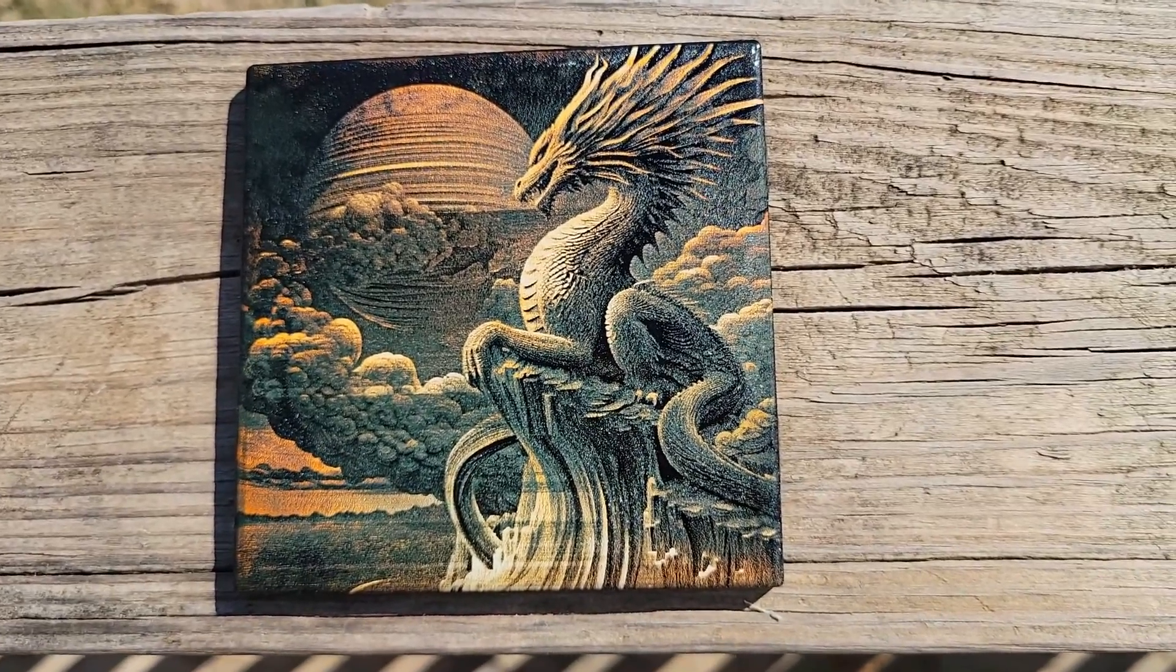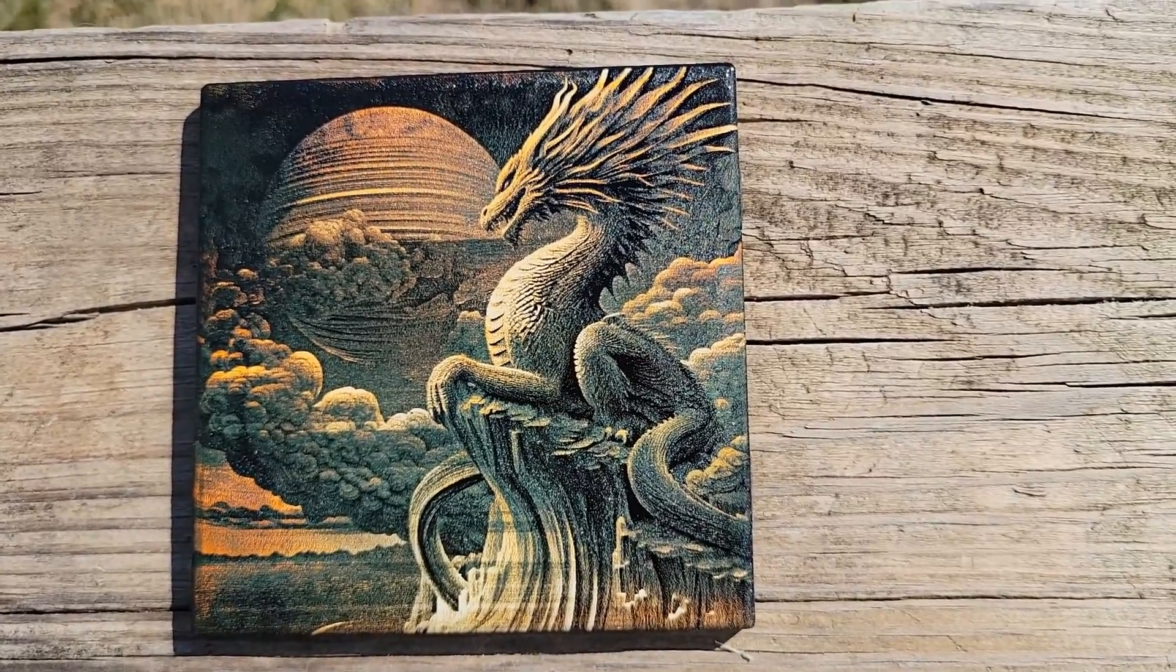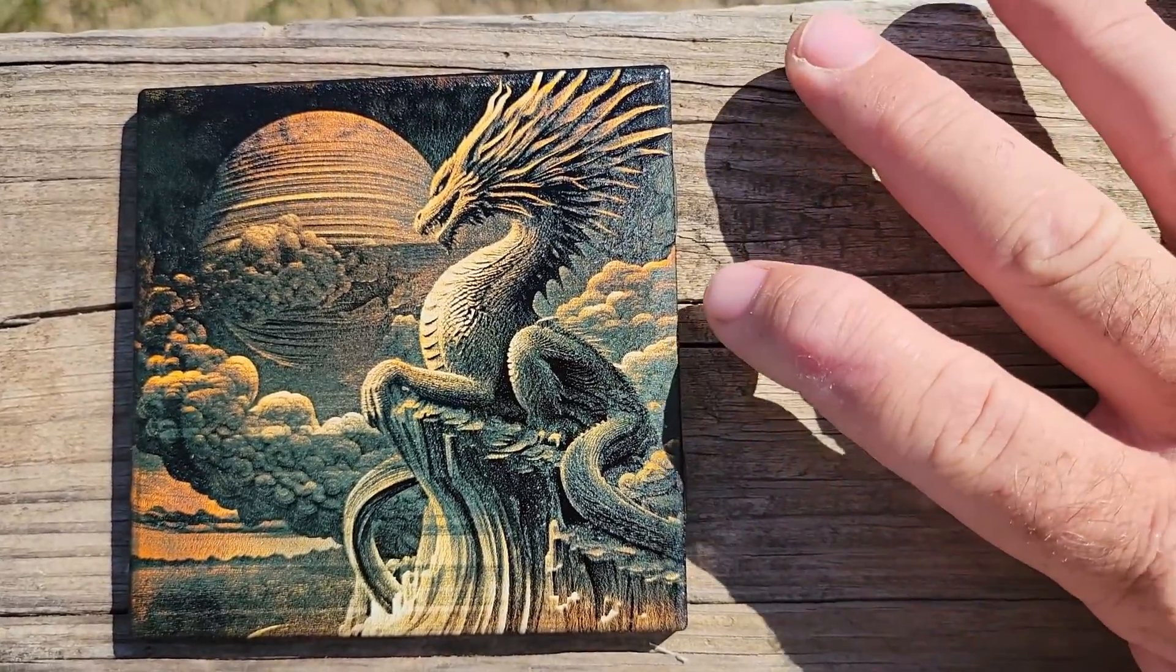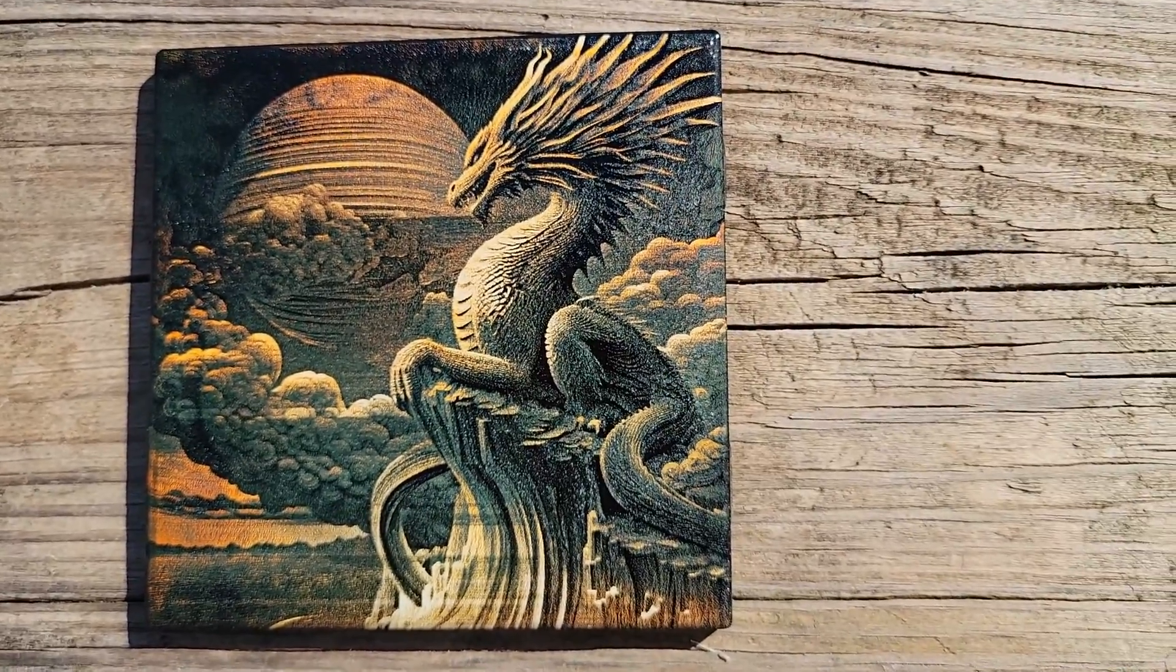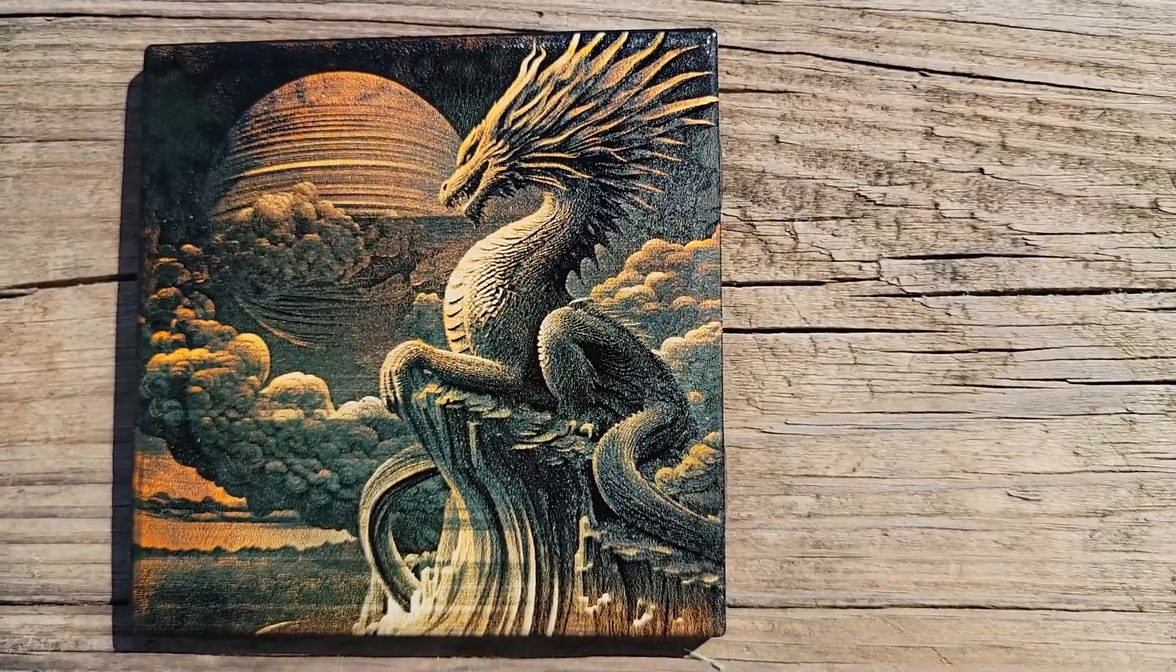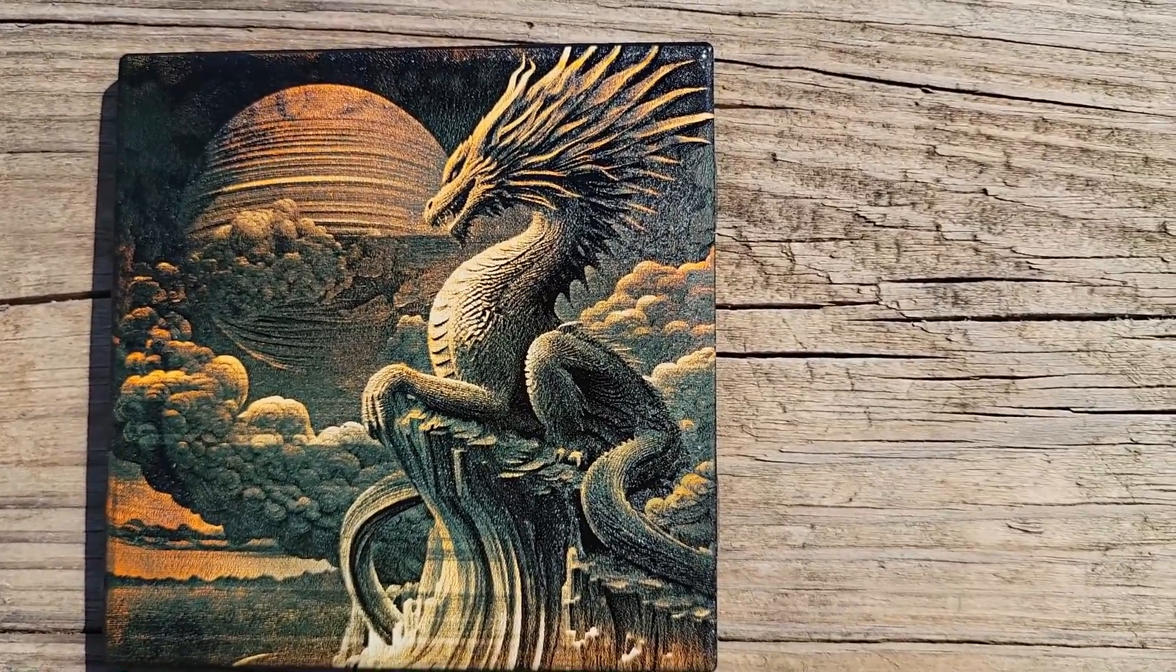So here we have our final tile. That came out just as good as I could hope for. I'm not sure if the camera will pick it up, but right in this area there is a little bit of green. It is a darker green, not the John Deere green, but I'll take it. It looks good.